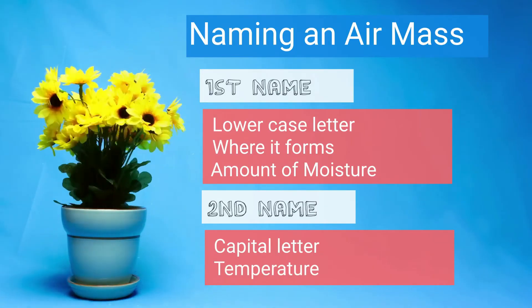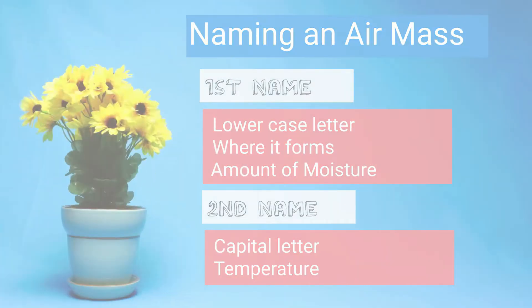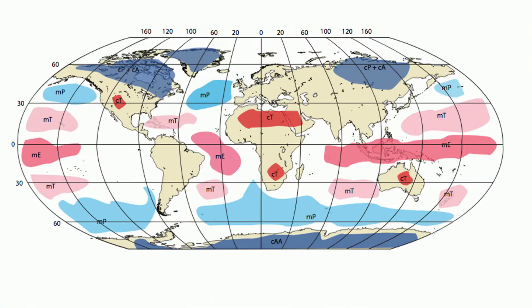Let's look at some examples. A lowercase c, capital T airmass is a continental tropical, which means it forms over land — that's continental — is dry, and has warm air because it's tropical.